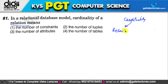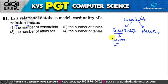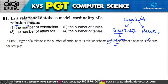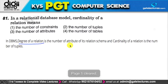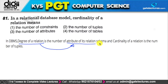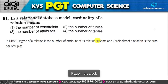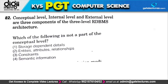Cardinality of a relationship is the maximum degree in which a relationship can participate — we can have minimum and maximum cardinality. Whereas for a relation: the degree of a relation is the number of attributes in its schema, and the cardinality of a relation is the number of tuples. So the correct answer is option 2 — cardinality equals number of tuples.